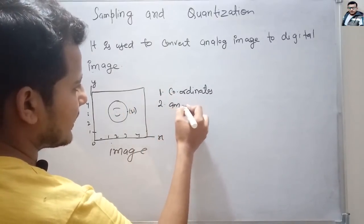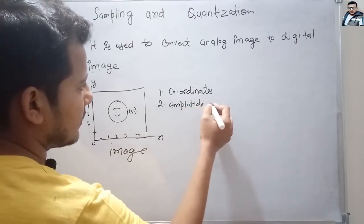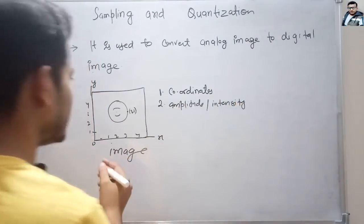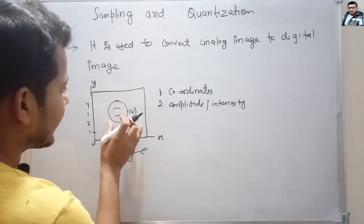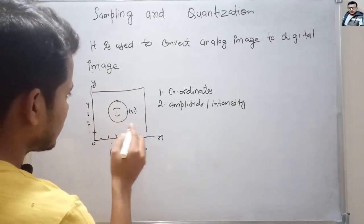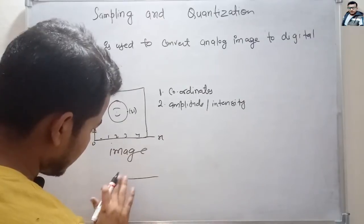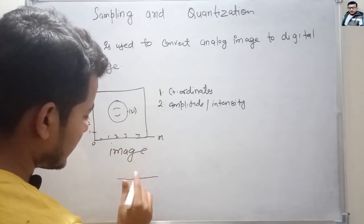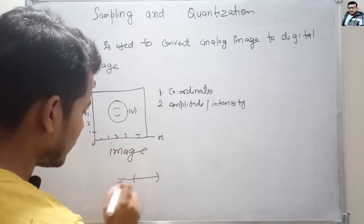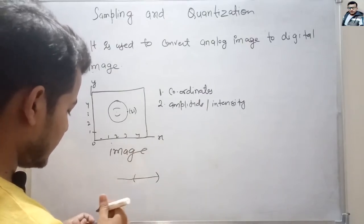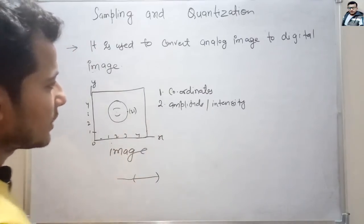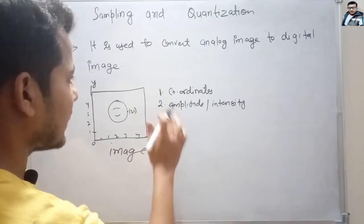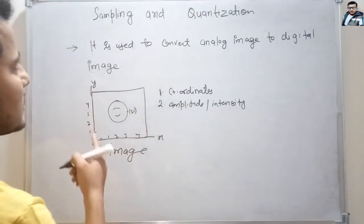The second component is amplitude or intensity. This is all about the lightness or darkness in the image. Suppose here it is lighter and here it is darker — then the intensity is high in one area and low in another. So the image includes two things: coordinates and amplitude or intensity.